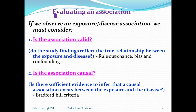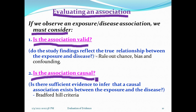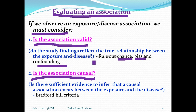When evaluating an association, if we observe an exposure-disease association, we must consider two things: first, is the association valid? Second, is the association causal? For an association to be valid, the study findings must reflect the true relationship between exposure and disease, and we must rule out chance, bias, and confounding factors.